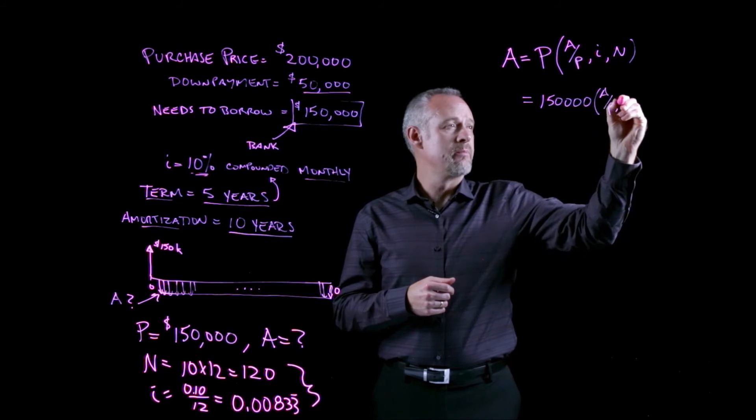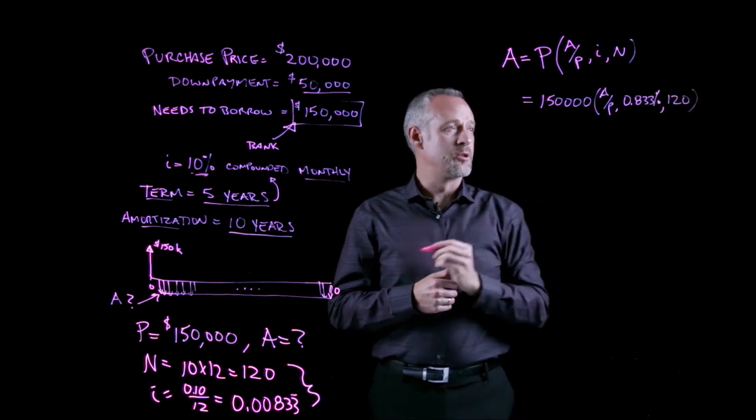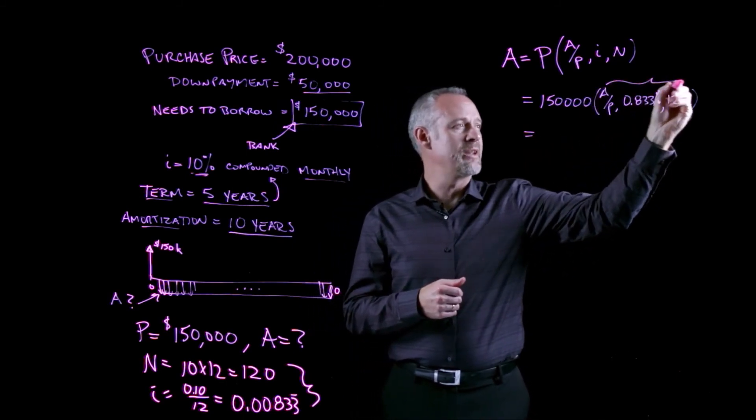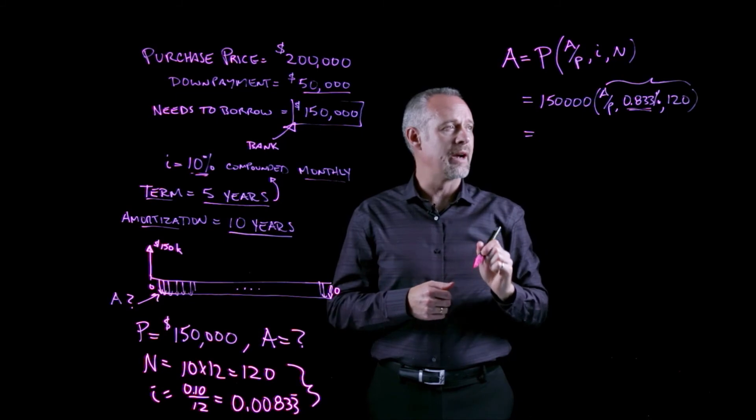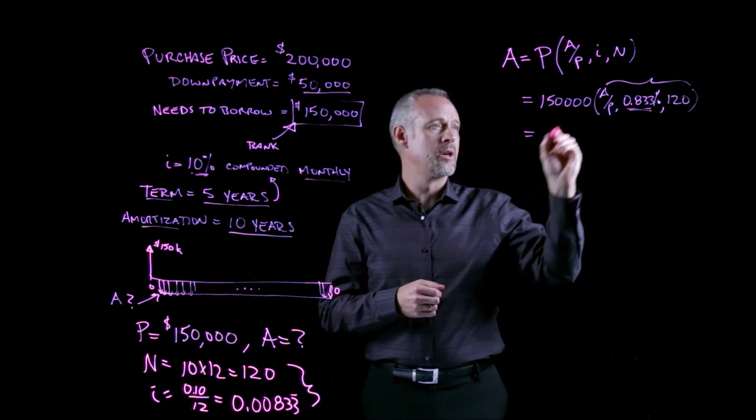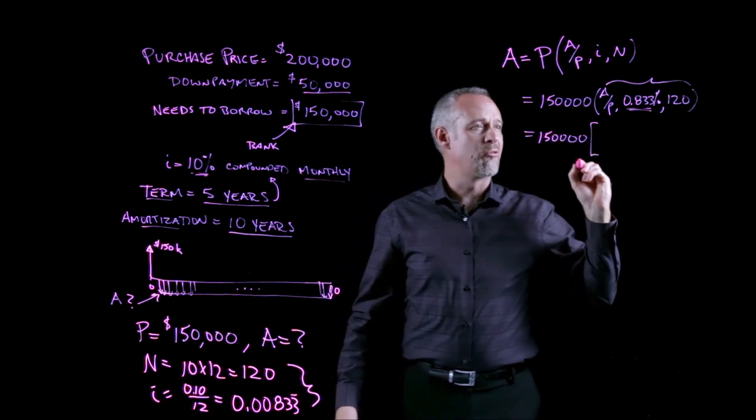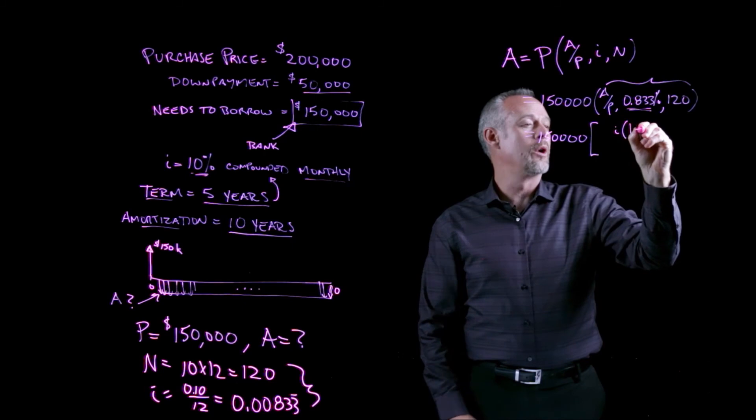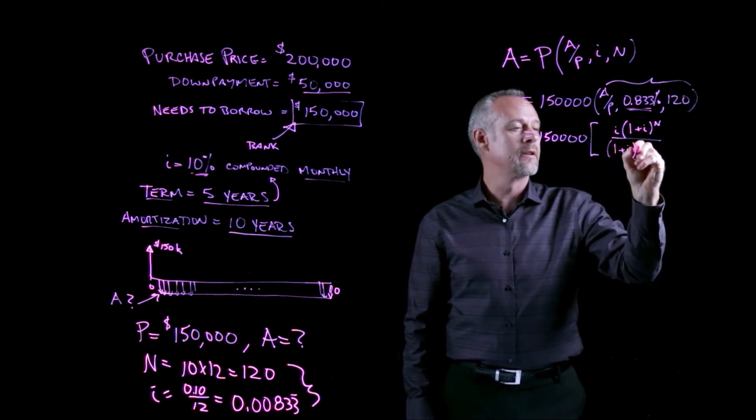If I plug the relevant numbers in for this particular problem, I have the A given P at, we'll call it 0.833% in 120 periods. And now it would be useful for me to go to a table to calculate the value or to find the value of this factor. Unfortunately, I can't do that because as you notice here, I do not have a nice round number. I have no choice but to actually use the formula for A given P. So I'll continue the problem, and I'll substitute the formula for A given P, which is I times 1 plus I to the N divided by 1 plus I to the N minus 1.